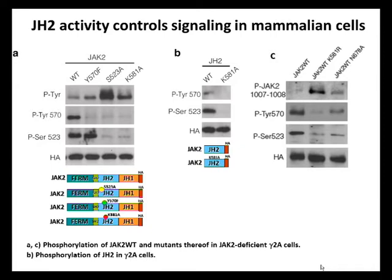After identification of the catalytic activity of JH2, it was of interest to study its functional properties in a cell system. Subsequent studies were done in JAK2-deficient gamma2A cells, and catalytic inactivation was performed by mutating the ATP-coordinating lysine 581 to alanine. As shown in the figure, inactivation of JH2 activity abrogates both tyrosine 570 and serine 523 phosphorylation and subsequently increases the basal activity of JAK2. Earlier studies had identified both serine 523 and tyrosine 570 as negative regulators of JAK2 activity, consistent with the negative regulatory function of the JH2 domain.